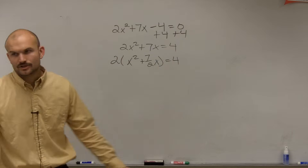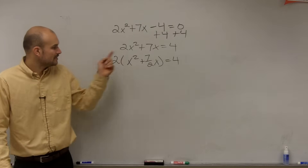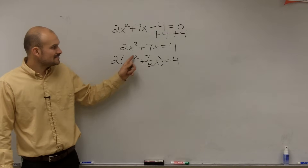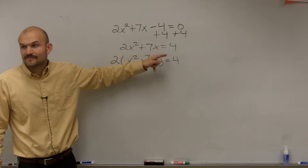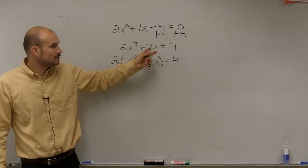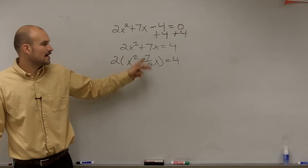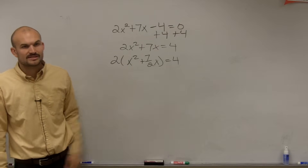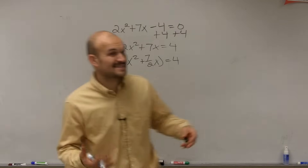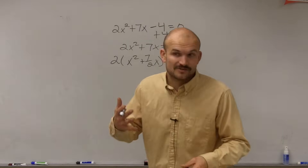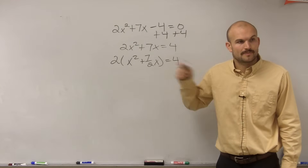Is that the correct way to factor out a 2? Let's double check by doing the distributive property. Is 2 times x squared equal to 2x squared? Yes. Is 2 times 7-halves x equal to 7x? Yes, because when you multiply across the 2's divide out, leaving you just with 7x. So when you factor something out and it doesn't evenly divide, this is the way it's going to look.